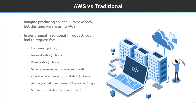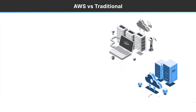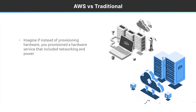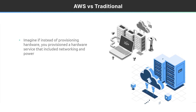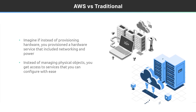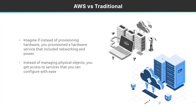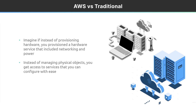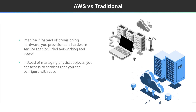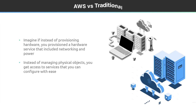With AWS, this is not how things happen — it's much more automated. Instead of having to provision hardware, you just talk to a hardware service that includes all the networking, cooling, and power already. Instead of managing physical objects like data centers, you're now just accessing services like virtual machine services, database services, or application services. In most cases they're already installed, and you just configure what you're looking for with ease.